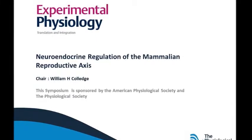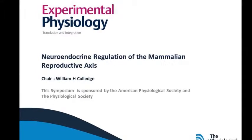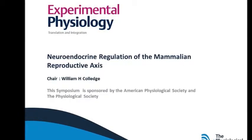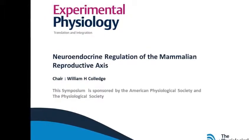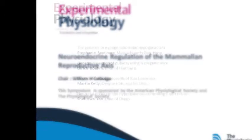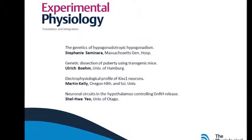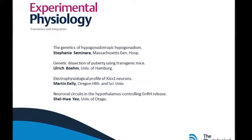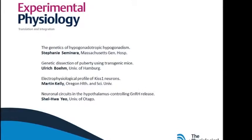The two populations of kisspeptin neurons respond differently to estradiol feedback from the ovary to regulate the estrus cycle in female rodents. Kisspeptin expression in the arcuate neurons is negatively regulated by estradiol, which is thought to regulate the tonic release of GnRH. Kisspeptin expression in the AVPV neurons is positively regulated by estradiol, which is required for generating the pre-ovulatory GnRH-LH surge. This symposium brought together experts in the kisspeptin field to provide detailed reviews of the clinical, genetic, molecular, and electrophysiological aspects of the neuroendocrine control of mammalian reproduction.